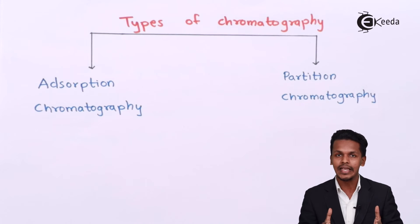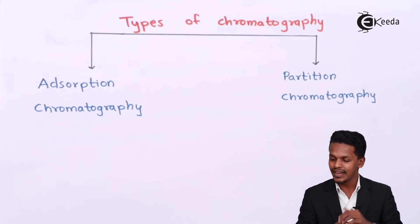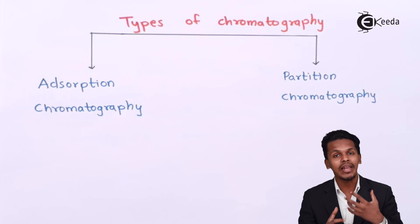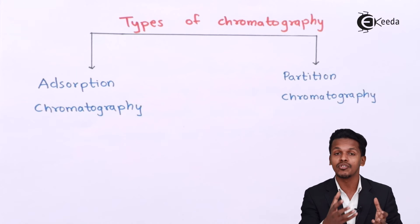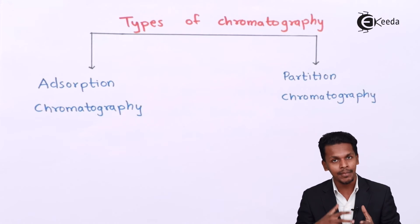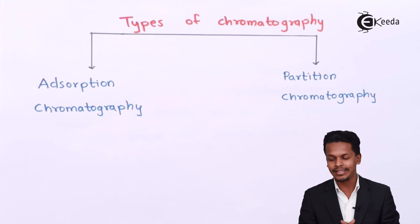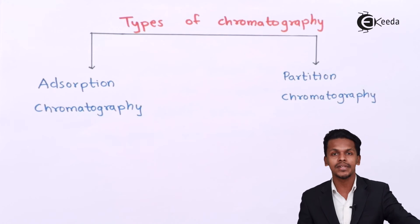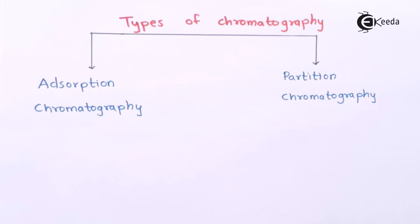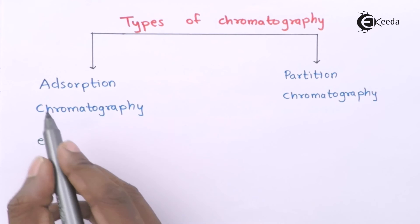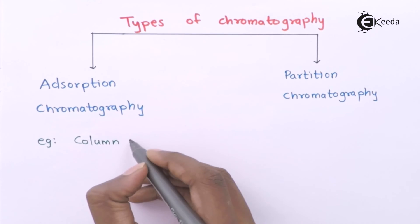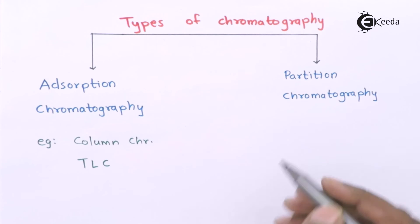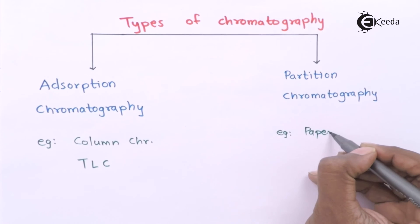Partition chromatography is a continuous and differential process where mixtures are separated continuously by a mobile phase acting on compounds present on the stationary phase. Examples of adsorption chromatography include column chromatography and thin layer chromatography (TLC). An example of partition chromatography is paper chromatography.